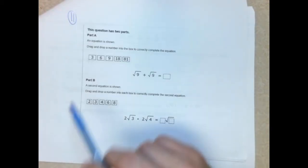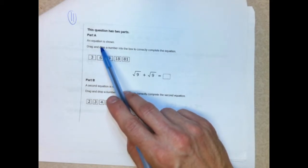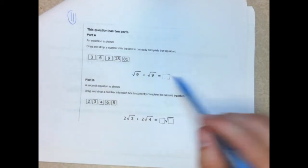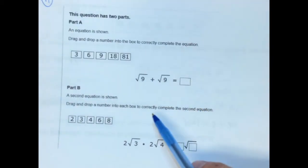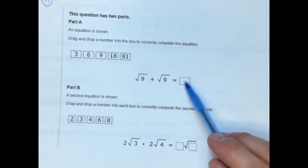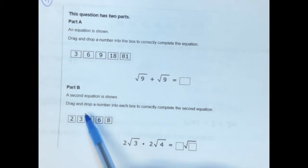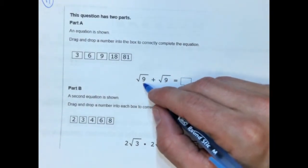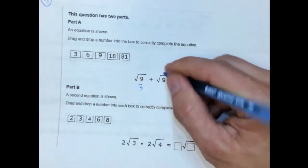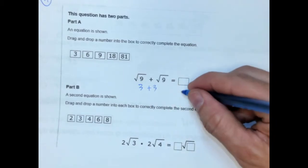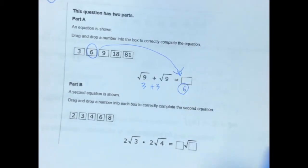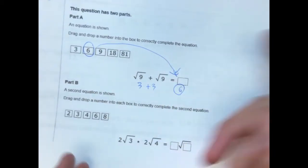This is number 11. It's saying to us, the question has two parts. An equation is shown. Drag and drop a number into the box to correctly complete the equation. So we have a series of numbers here. Let's zoom in a little bit here. And we have some radicals here. So we have radical 9 plus radical 9 equals blank. And then part B, a second equation is shown. Drag and drop a number into each box to correctly complete the equation. All right. So this is really, hey, do you know how to simplify radicals? What's the square root of 9? Well, the square root of 9 is 3. And the square root of 9 is 3. And 3 plus 3 is 6. So that would be the answer, 6. You just drag it down right in there. When you solve this on the Chromebook, you're just literally just putting your mouse over that and dragging it down.